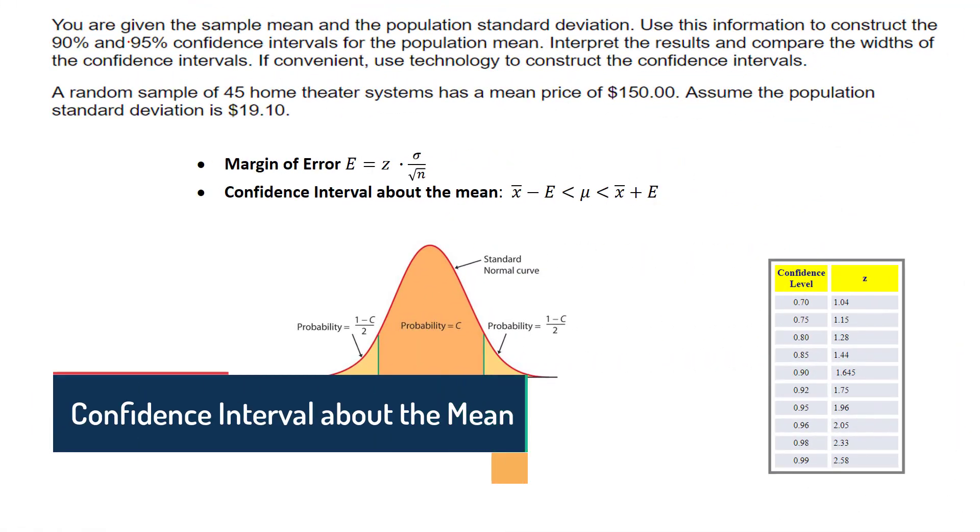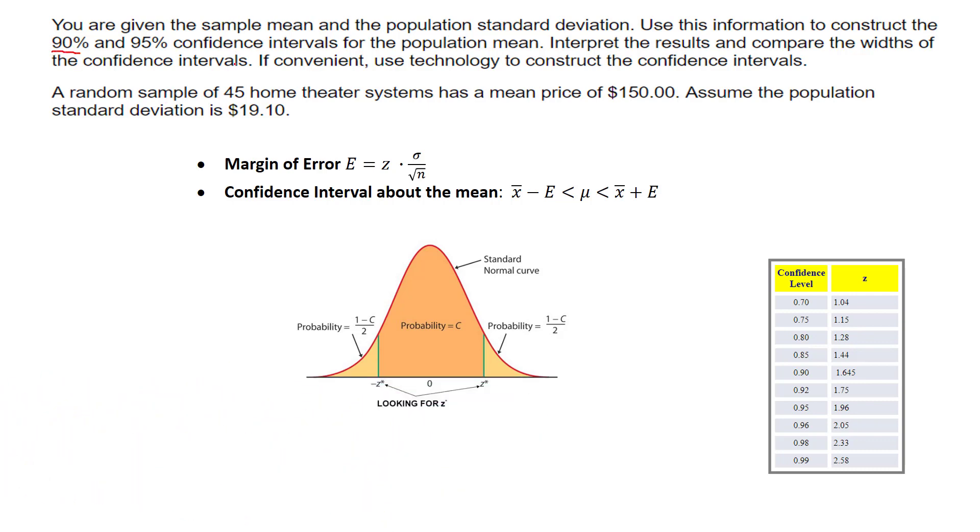We want to come up with a confidence interval based on some information, and I'm just going to do the 90%. I'll leave it up to you to do the other one. They give me a random sample of 45 homes, so I know that 45 is n, with a mean price. That's my sample mean.